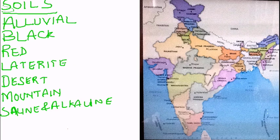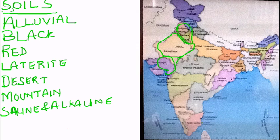The next soil is the sandy, saline, and alkaline soil, which contains salts like sodium, magnesium, and calcium. The accumulation of these salts, transported by rivers and canals, makes it infertile and unfit for cultivation. It is sandy and loamy in texture. Parts of Gujarat, Rajasthan, Punjab, Haryana, Uttar Pradesh, and Maharashtra have this type of soil. It is also known by different names such as Ray, Kallar, or USAR.